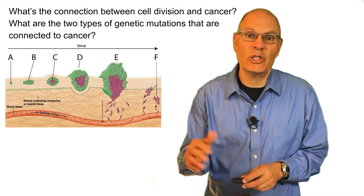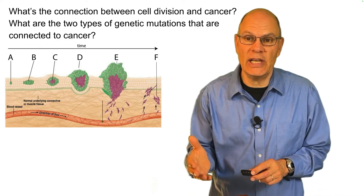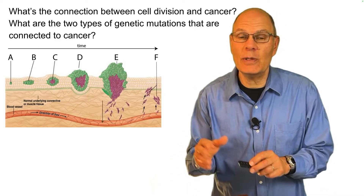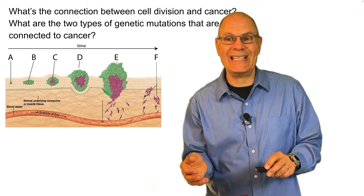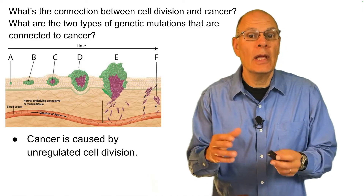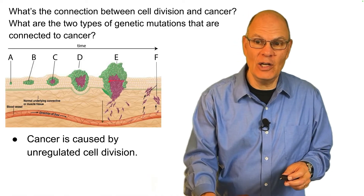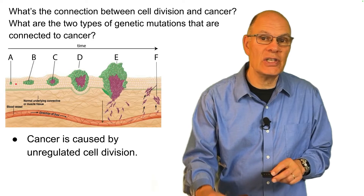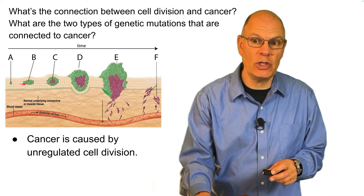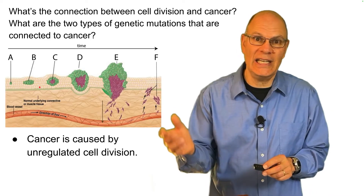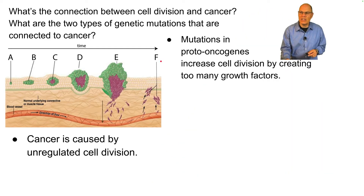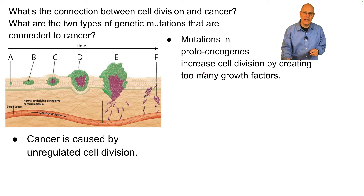Now let's talk about dysregulation of the cell cycle and its connection to cancer. Cancer is a disease of unregulated cell division. As opposed to cells staying in place doing what they're supposed to do, they become rogue players pursuing their own destiny at the cost of the organism. Mutations in genes called proto-oncogenes increase cell division by creating too many growth factors.